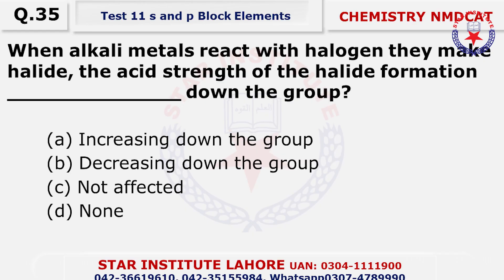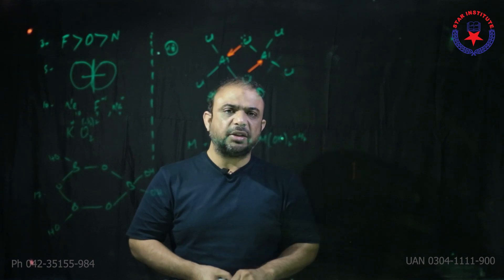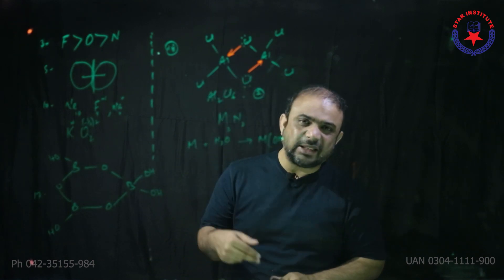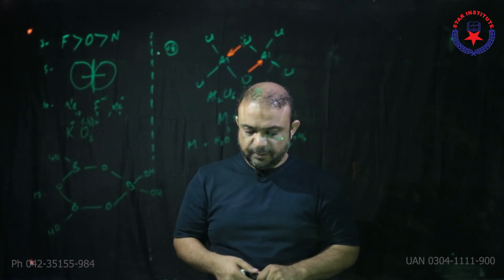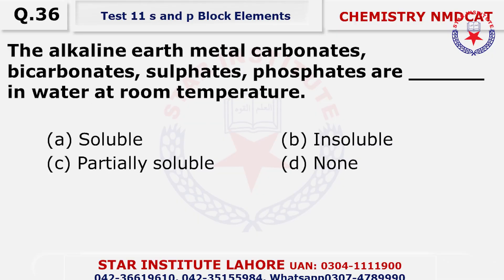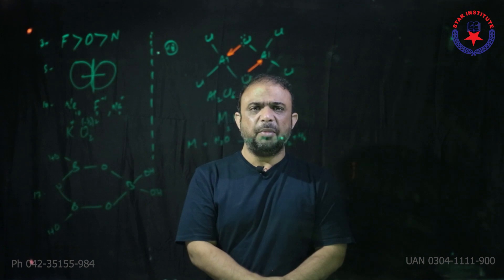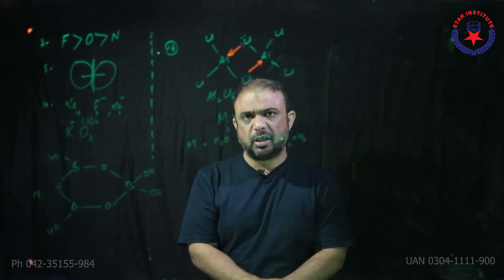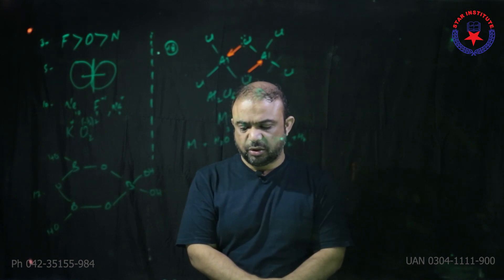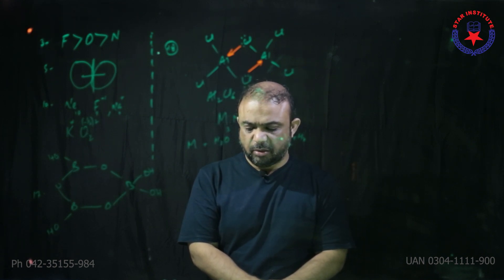Question number 35: When alkali metals react with halogens, they make halides. The ease of halide formation increases down the group. Question number 36: The alkaline earth metals' carbonates, bicarbonates, sulfates, and phosphates are partially soluble in water at room temperature. That is why we call them alkaline — they are not 100% soluble, they make the solution alkaline, and they are obtained from the earth's crust. The choice is C — partially soluble.